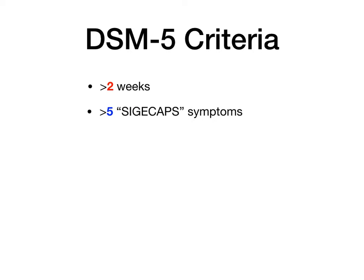There are a couple of really important things about the DSM-5 criteria for MDD. First, the symptoms have to be going on for at least two weeks. A way to remember this: depression is 'two blue weeks.' We can contrast that to mania in bipolar I disorder, which is 'one fun week.' So for major depressive disorder, symptoms must be present for at least two weeks.